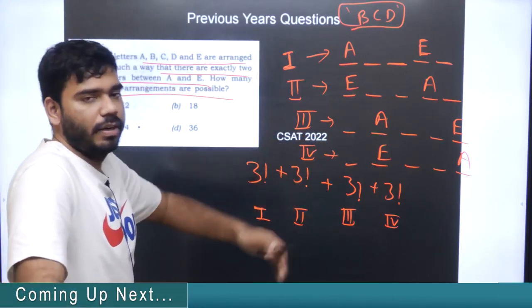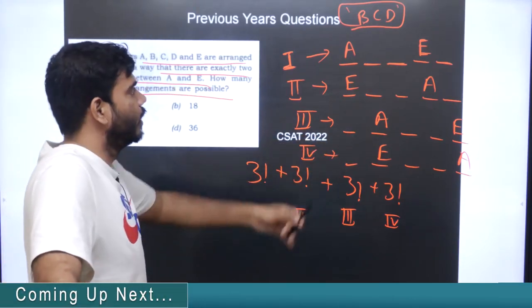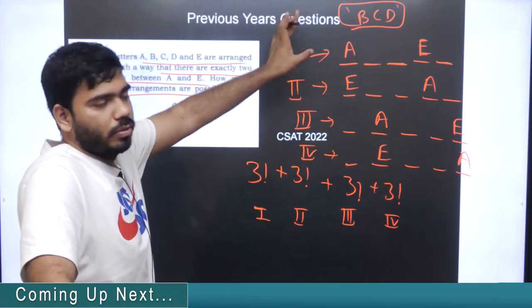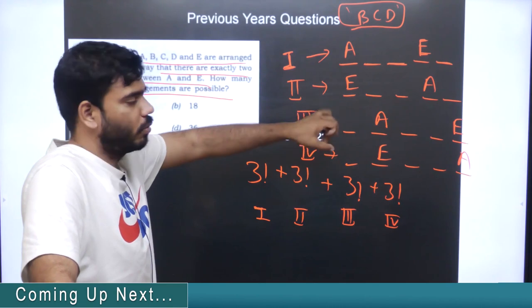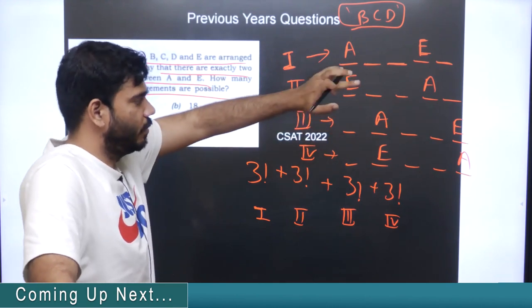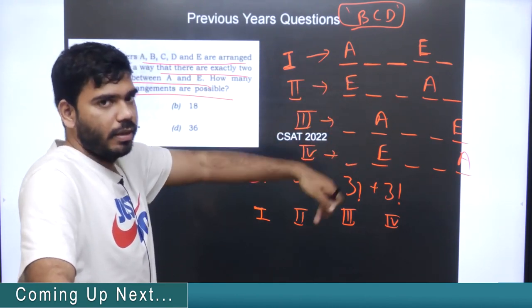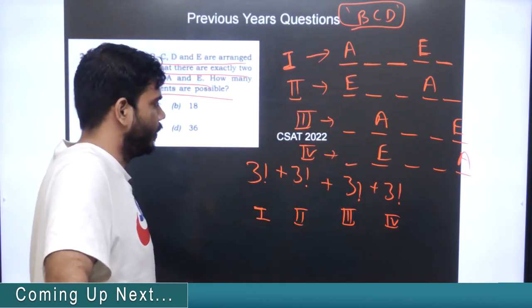In the third case we have three different possibilities and three different places, so this is also three factorial ways we can rearrange themselves. Similarly in the fourth position we can arrange themselves in three factorial ways.